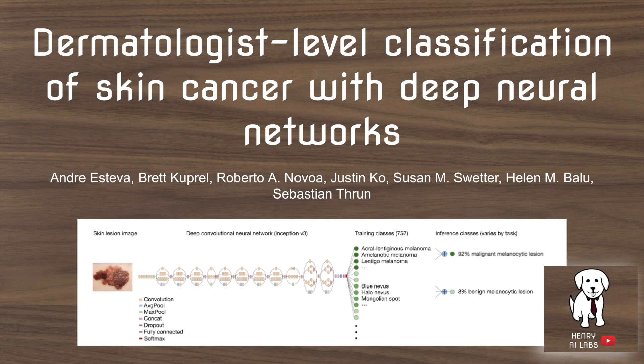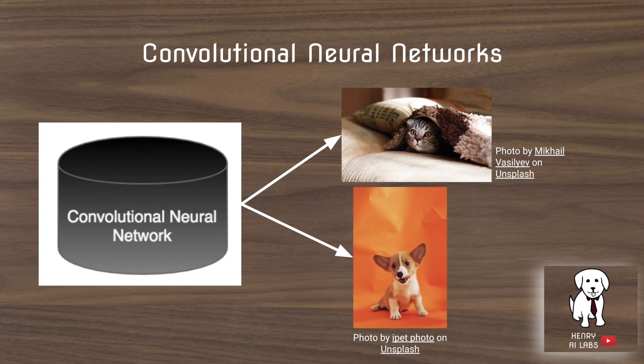This video will present dermatologist-level classification of skin cancer with deep neural networks. Convolutional neural networks are a branch of deep learning that maps images to class labels. A popular way of understanding this is through examples of classifying images of cats and dogs. The convolutional neural network takes as input an image, uses a series of convolutional filters and other techniques from the deep learning community for computer vision, and then maps the images into class labels such as cat or dog.